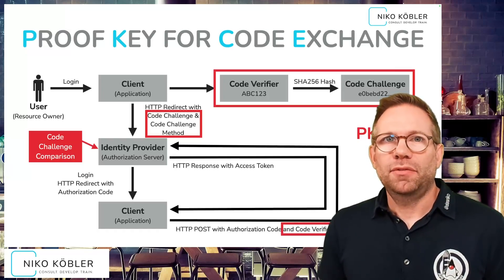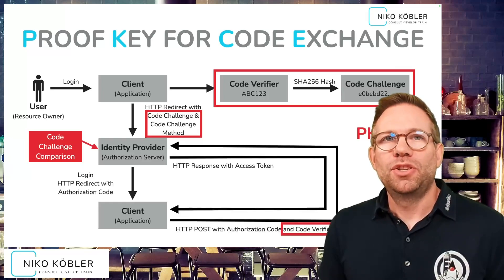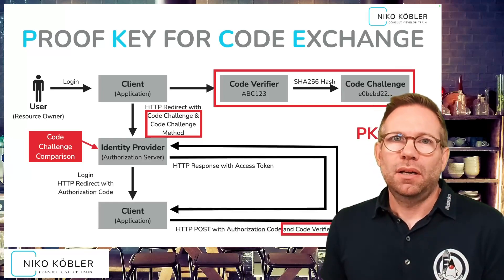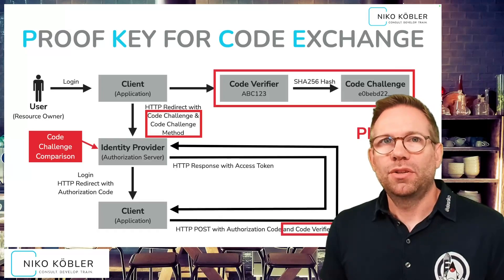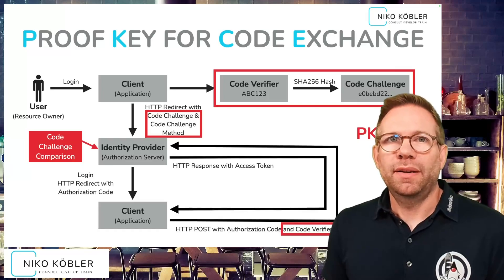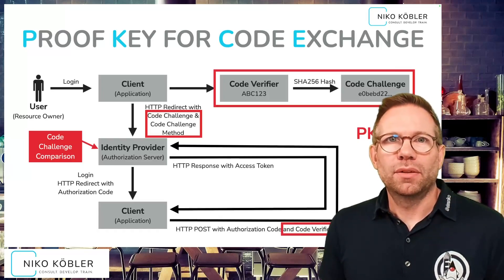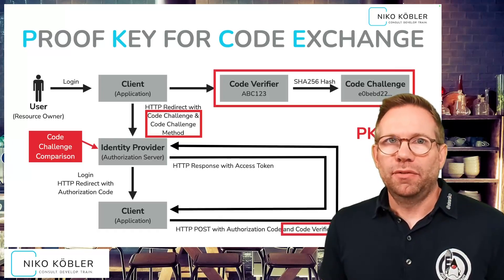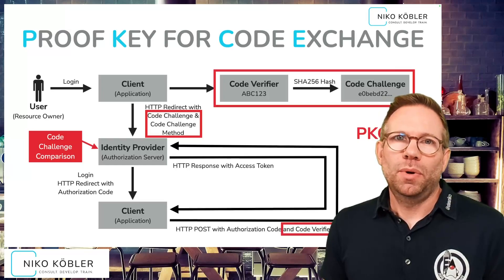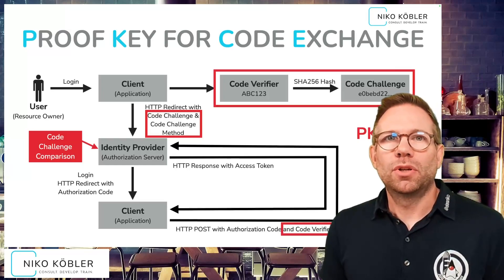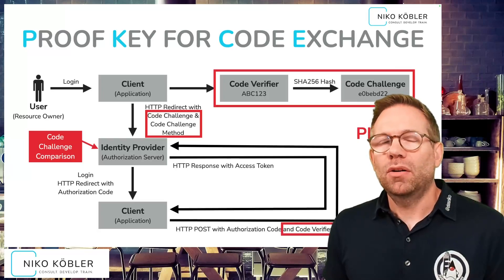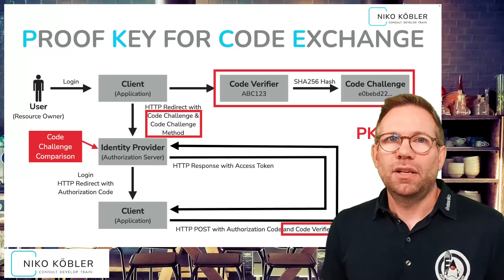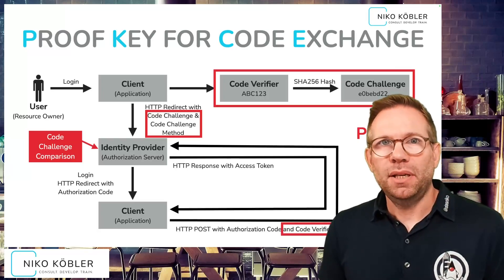From today's perspective, this is secure enough to establish a trusted connection between the client and the identity provider to exchange the authorization code and the tokens without having a secret. This is valid for public clients, and in the future, when OAuth 2.1 is released, you'll have to use PKCE also for your confidential clients — then you have the client ID, the client secret, and PKCE. Because it adds another layer of security and it doesn't hurt. It's not that much effort to calculate a SHA-256 hash from a random string.